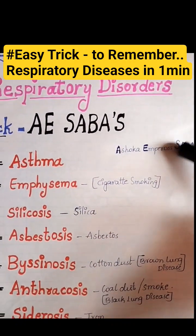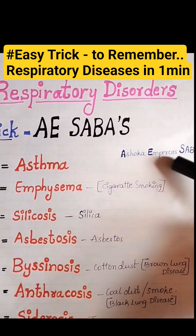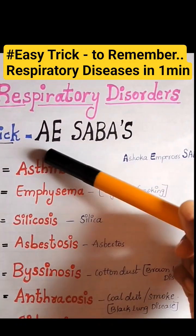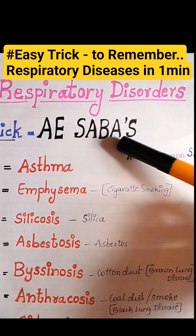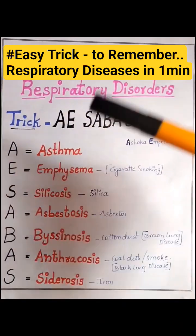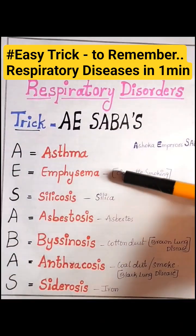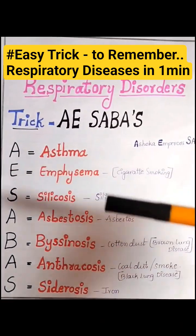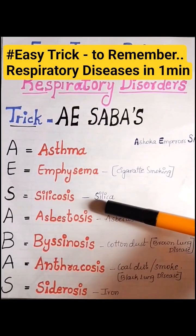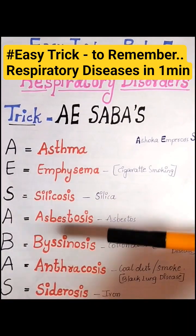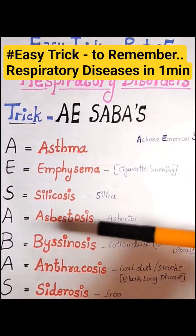Here, A is Asthma, E means Emphysema, S is Silicosis, A is Asbestosis, B is Byssinosis, A is Anthracosis, and S is Siderosis.